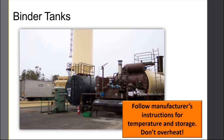The binder is going to be stored in tanks and typically ordered and delivered to the plant. Make sure you're following the manufacturer's instructions for temperature and storage, and make sure that you don't overheat it. Many of our binders have a polymer modification — extra chemical additives that make it behave the way we want. If we don't follow those temperature requirements, we could actually overheat it and cook some of that out. That's the expensive part that we paid for — we don't want to lose that.